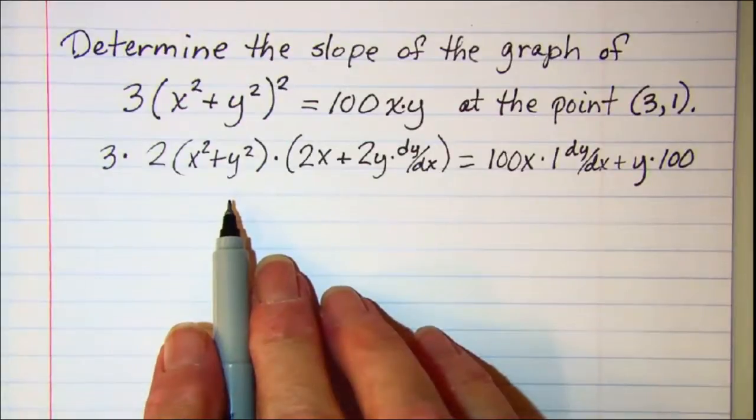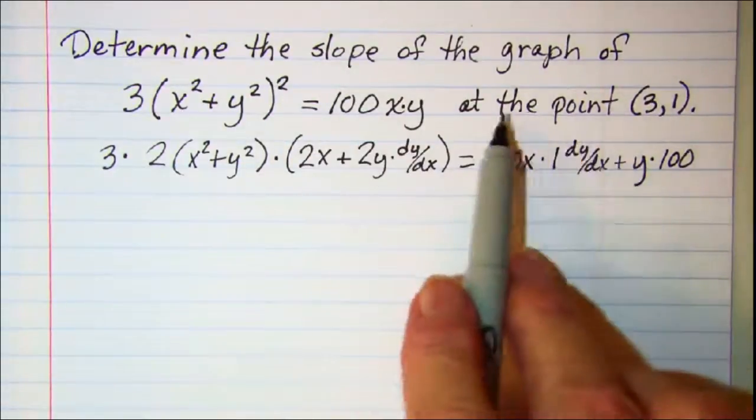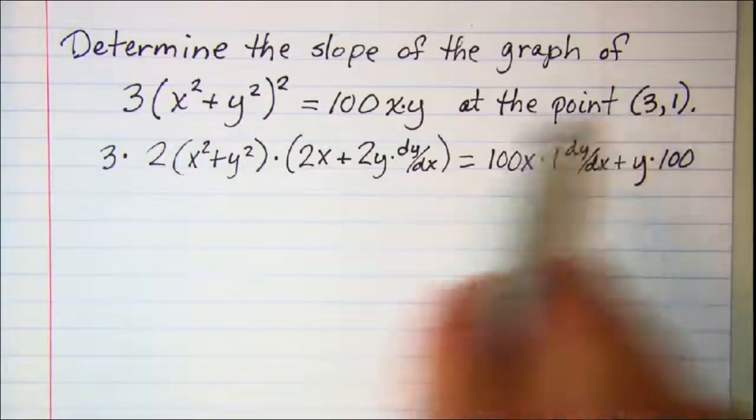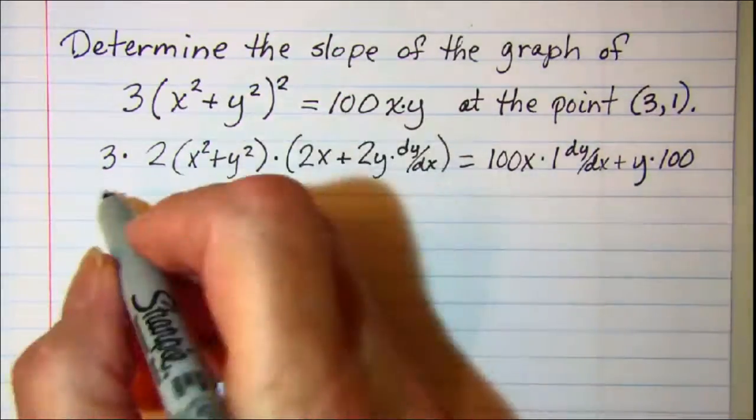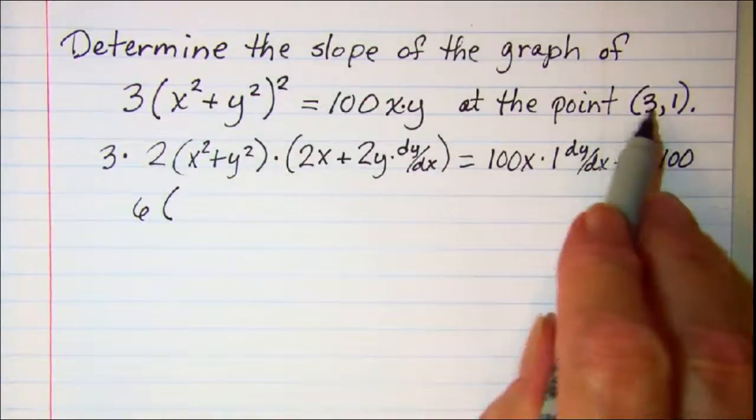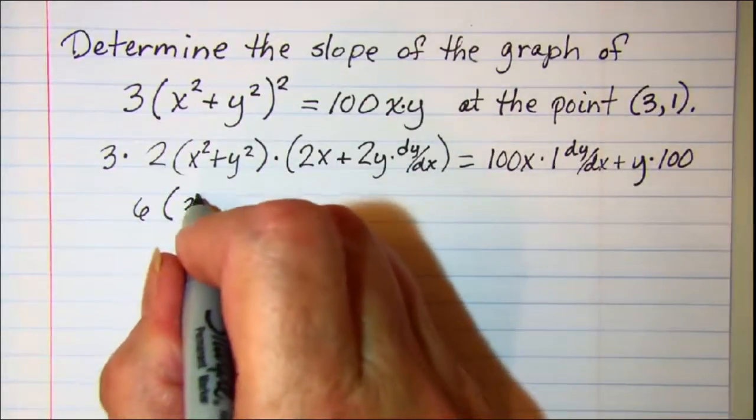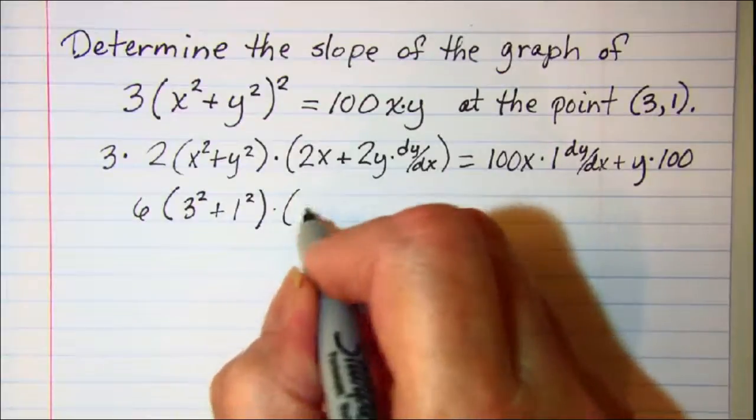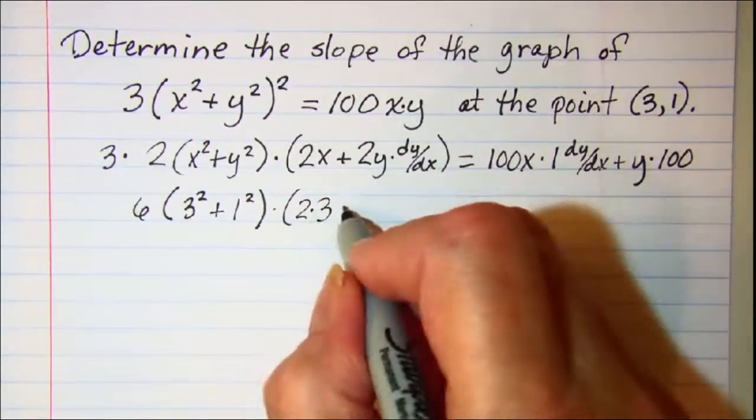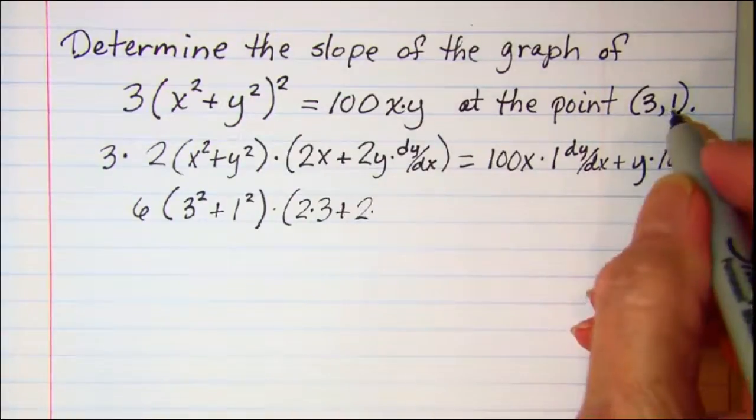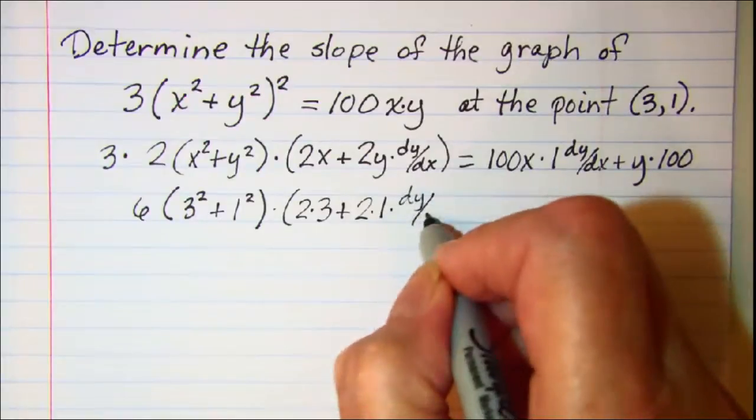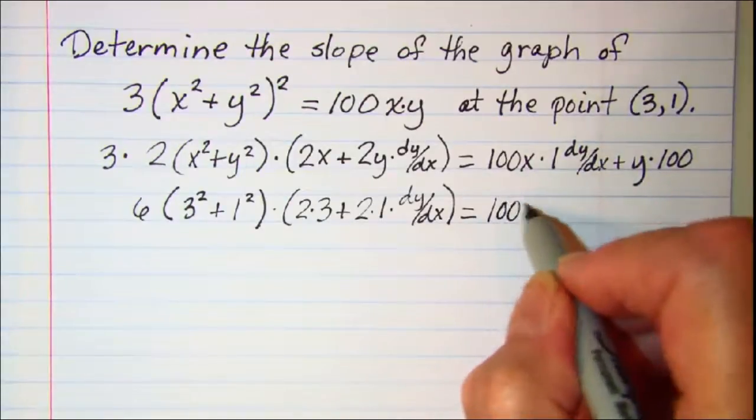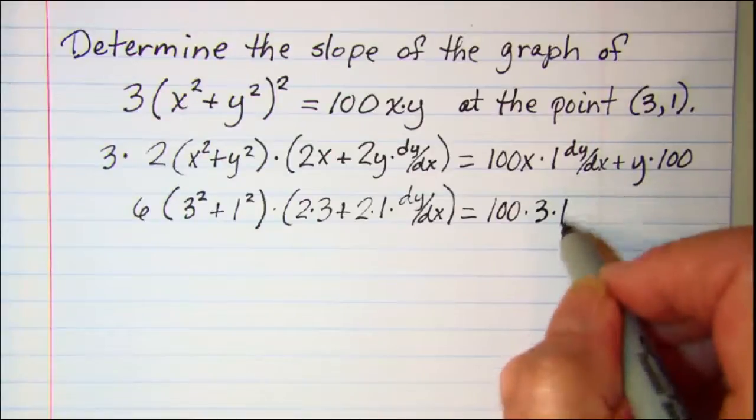Let's simplify this a little bit and in fact since I'm finding the slope at the point I can go ahead and substitute 3 for x and 1 for y and make this even simpler. So here I have 6, my x value is 3 and my y value is 1. That's multiplied by 2 times 3 plus 2 times 1 times dy dx equals 100 times 3 times 1 times dy dx